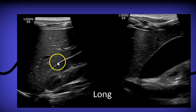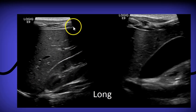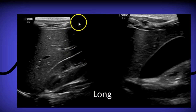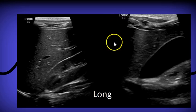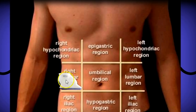In sagittal, Morrison's pouch is a good place to rule out free fluid. If you're doing a four-quadrant scan or a FAST scan to rule out free fluid in a trauma patient, you want to make sure you include the tip of the right lobe of the liver, because sometimes fluid accumulates there. You also have your sagittal gallbladder where you can rule out gallstones.